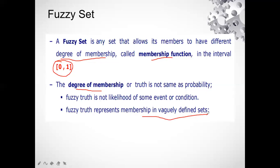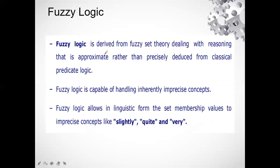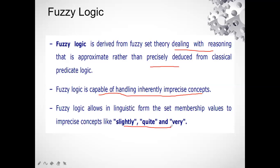Fuzzy logic is derived from fuzzy set theory and deals with reasoning that is approximate rather than precisely deduced from predicate logic. It does not give an exact answer; it holds up uncertainty. Fuzzy logic is capable of handling inherently imprecise concepts. It allows membership values to be expressed in linguistic form using imprecise concepts like 'slightly,' 'quite,' and 'very' — for example, slightly cold, quite cold, or very cold.